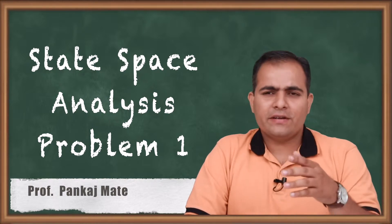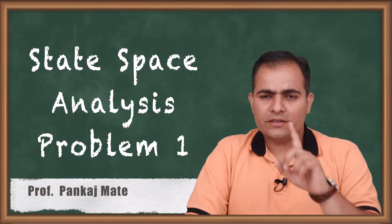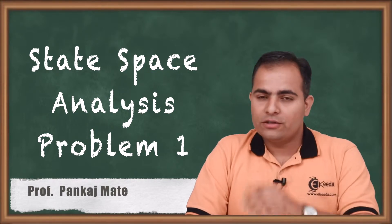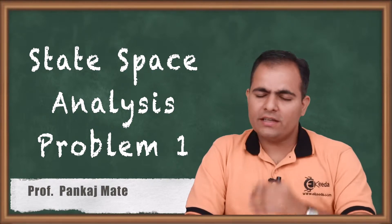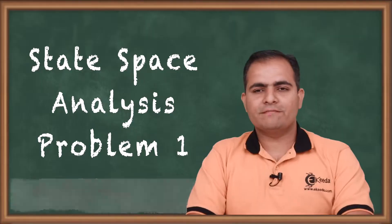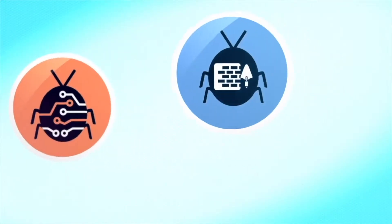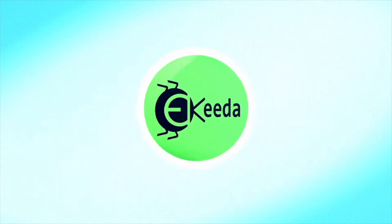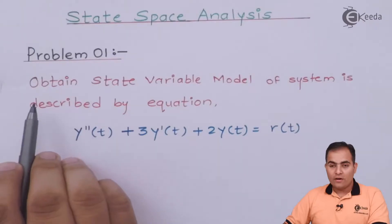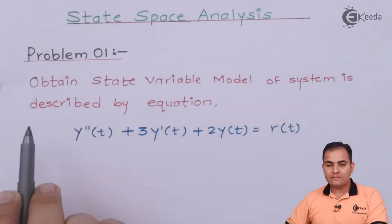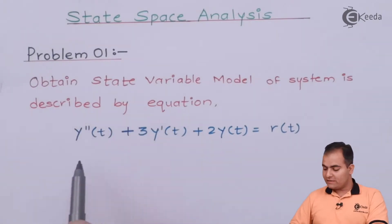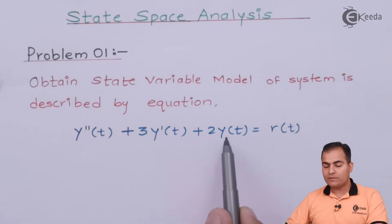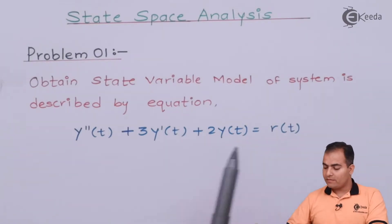There are different types of numericals asked on this chapter. The first numerical we are going to solve is based on the state variable model. The question is: obtain the state variable model of a system described by the differential equation y-double-dash(t) plus 3y-dash(t) plus 2y(t) equals r(t).